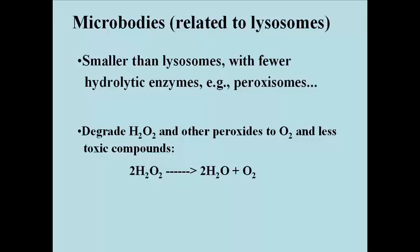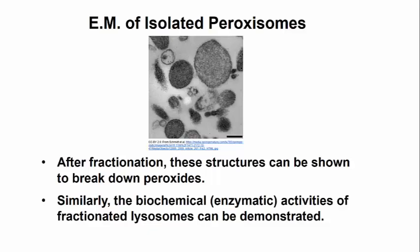One example is peroxisomes, which are particularly rich in enzymes called peroxidases that destroy highly toxic and destructive peroxides, like hydrogen peroxide, that are generated as a byproduct of some biochemical reactions. Here we see the chemical reaction in which two molecules of H2O2 are broken down into two molecules of water and a molecule of oxygen gas. An isolate of vesicles from cells expected to contain peroxisomes can be identified by showing that they break down added peroxides.